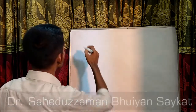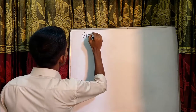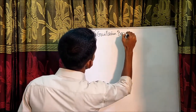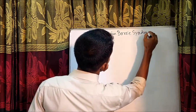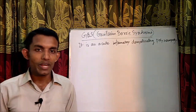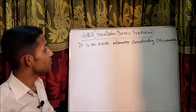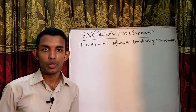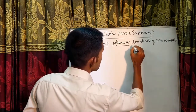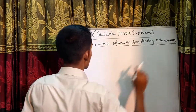I'm Dr. Shrikot. Today I'll discuss Guillain-Barré syndrome. GBS or Guillain-Barré syndrome is an acute inflammatory demyelinating polyneuropathy — so it is acute, inflammatory, demyelinating, and a polyneuropathy.